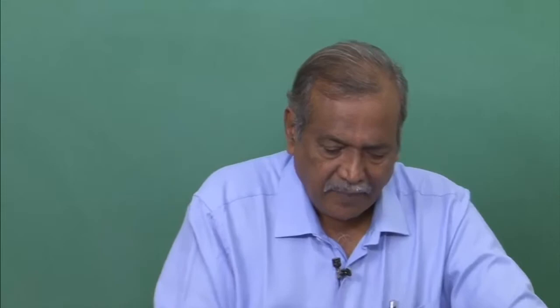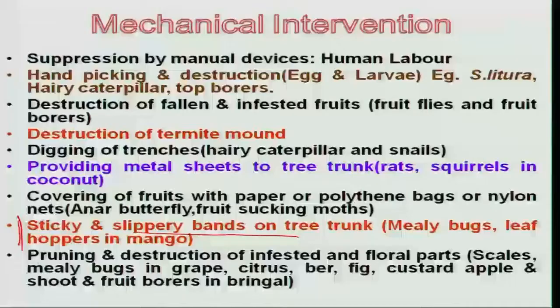Similarly, plants already affected by insects — particularly scale insects or fruit borer damage — represent parts already lost. If you leave those affected plant parts on the plant, population build-up takes place and they further cause damage to healthy plants. That is why removal of these affected plant parts becomes an important mechanical device to reduce the pest population.